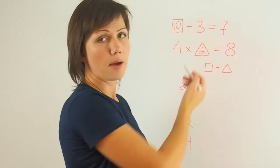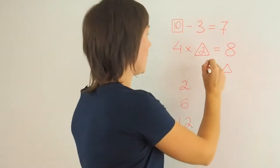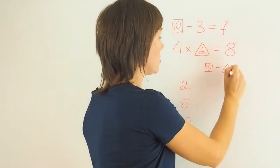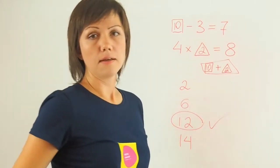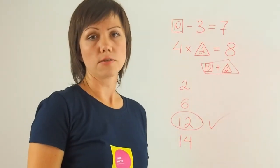These two numbers make my equations balanced. And if I add them together, 10 plus 2, I'll get 12. So 12 is the correct solution.